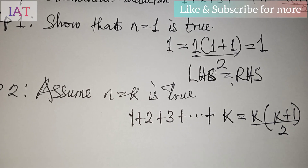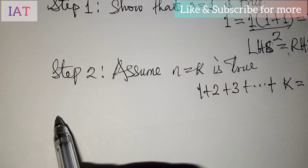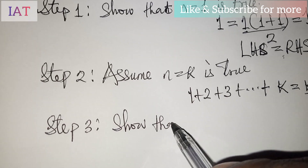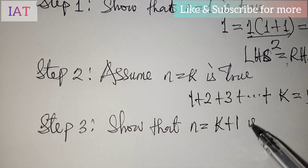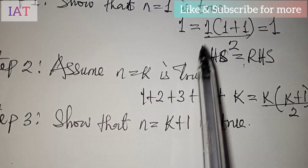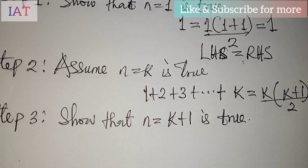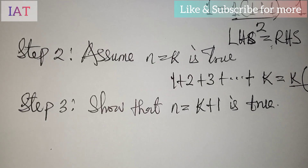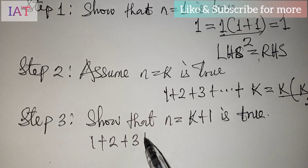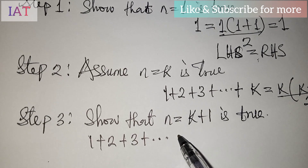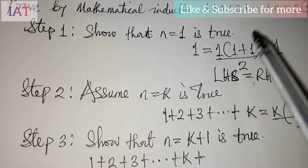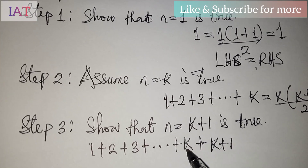Step three: from the assumption made in step two, we're going to prove that n equals k plus one is true. We increase the left hand side from k to k plus one: one plus two plus three plus up to k plus one. On the right hand side, wherever we have n we substitute k plus one, so we have (k+1)(k+1+1) all over two.